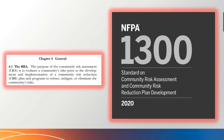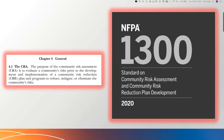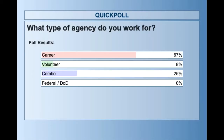We're going to talk a little bit about NFPA 1300, but first I've got one more question — what type of agency do you all work for? Are you career, volunteer, combo, or federal/DOD? Closing on three, two, one. We've got a good mix today — about two-thirds career, some combo, and then some volunteers. Excellent.